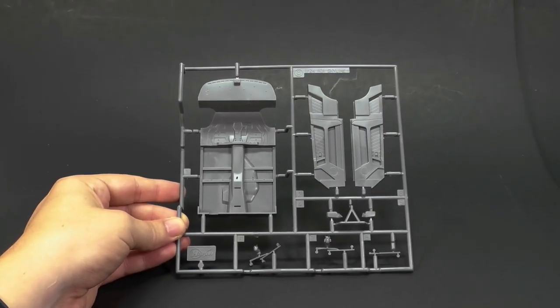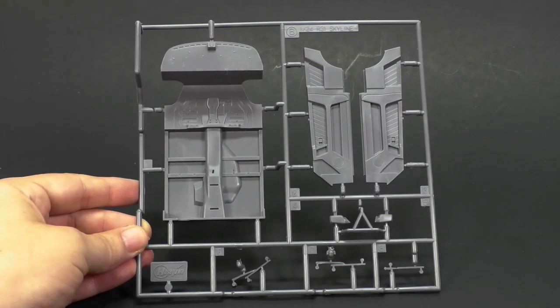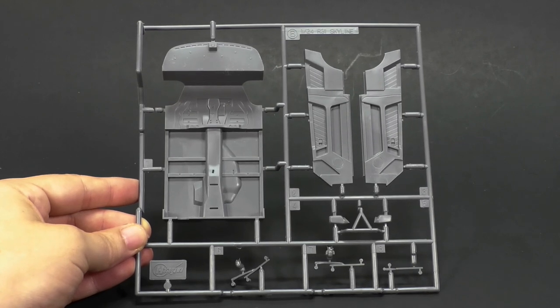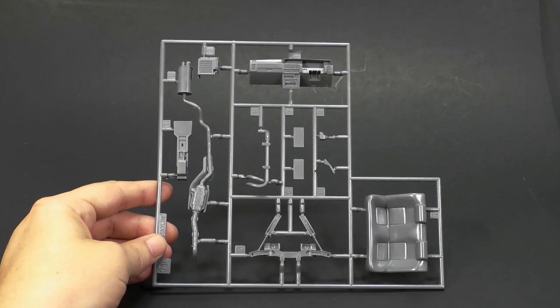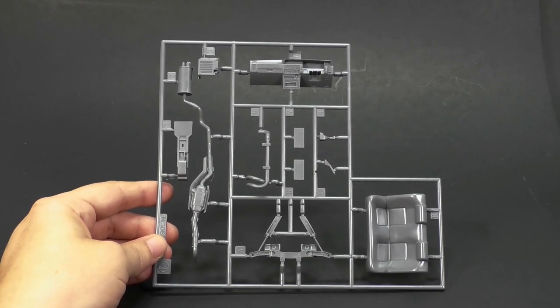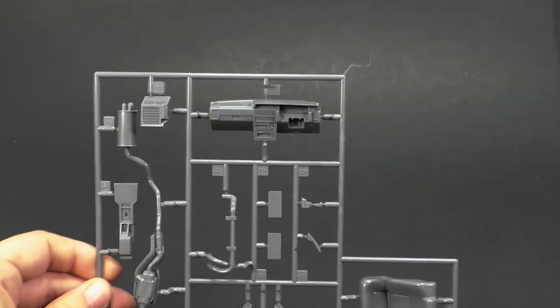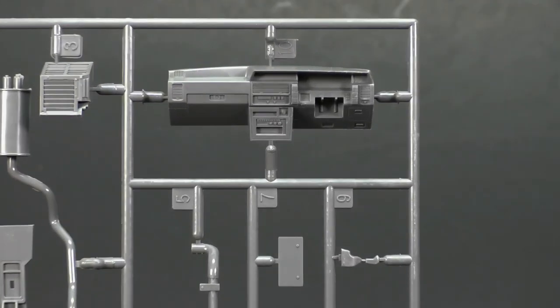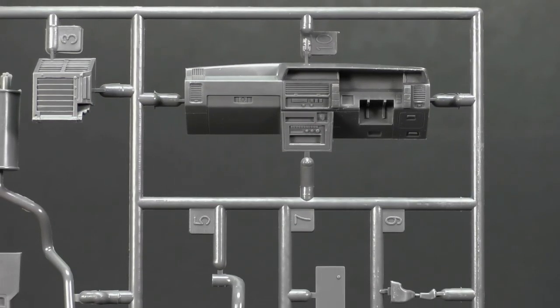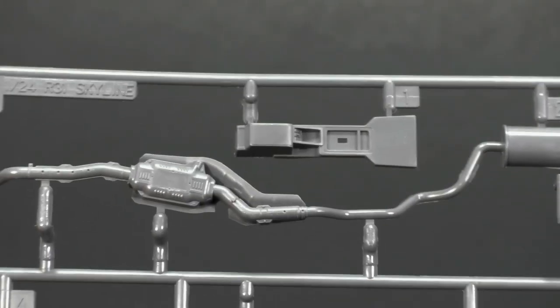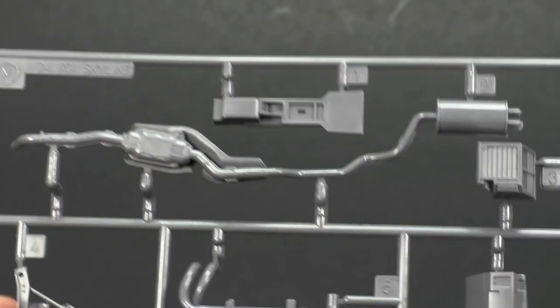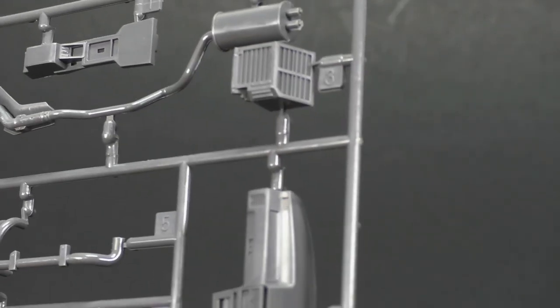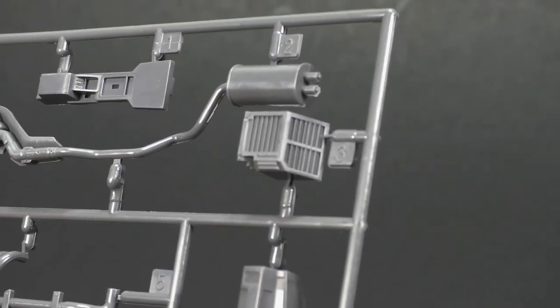And moving right along to the interior parts tree. And again, this is going to be another parts tree that is going to be identical in the race car version kit. And now this parts tree is going to be for this kit. It contains the stock parts. So up here we have the stock dashboard, along with the stock exhaust system and the center console piece.